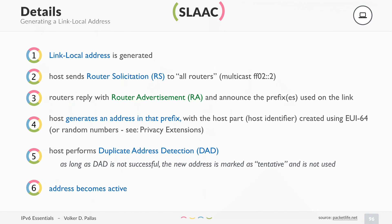Once you have generated your address, you have to use duplicate address detection to make sure your new address is unique. If it is not unique, it is marked as tentative and it is not used yet, so all communication is reliant on the link-local address. If you get no neighbor advertisement back to your DAD message, then you know: I have an address from the prefix that this router announced, I also know my router's address, nobody is using my own address yet — so I will use it, and the address becomes active.